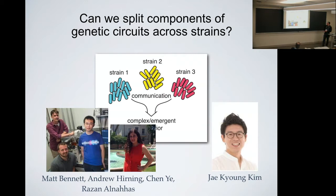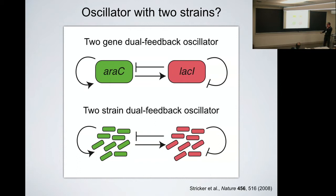The first circuit we looked at was an extension of a dual feedback oscillator built in Jeff Hasty's lab about 11 years ago. It has one gene that activates itself and the opposing gene, and one gene that represses itself and the opposing gene. This is very similar to a Wilson-Cowan model in neuroscience, exhibiting the same types of oscillations. It's an oscillating circuit constructed in a single cell, exhibiting robust oscillations across a range of temperatures.